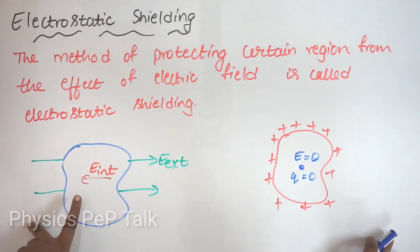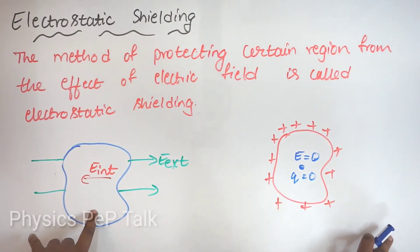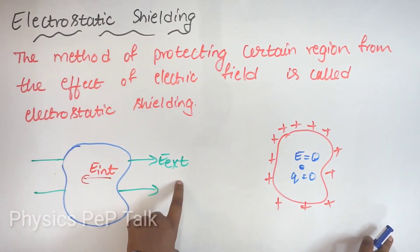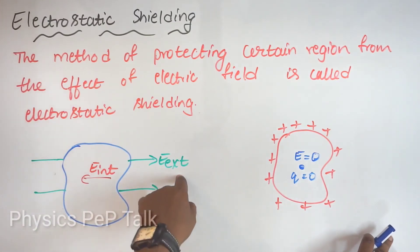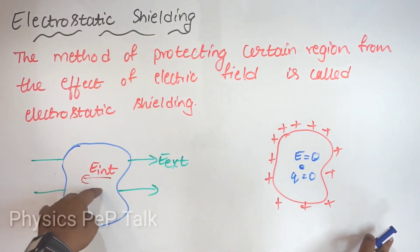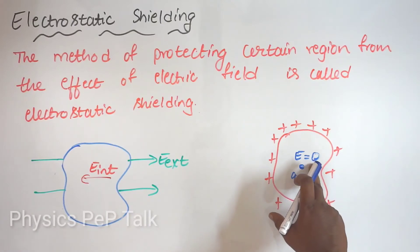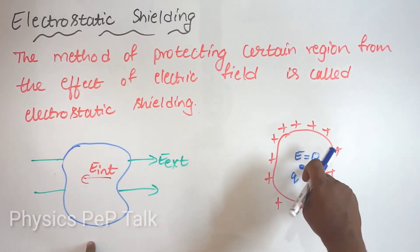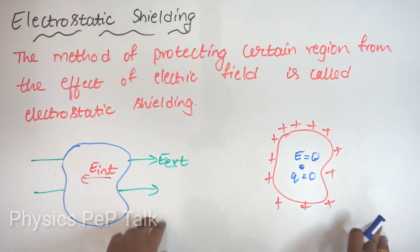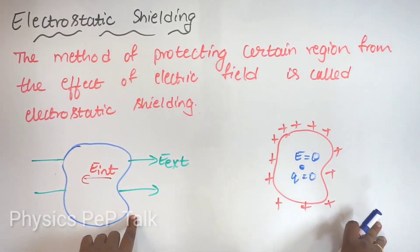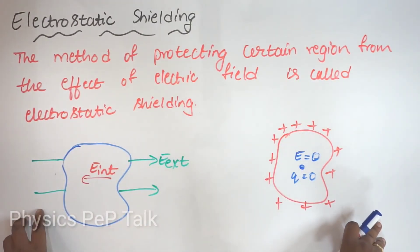Electrostatic shielding: if an uncharged conductor is placed in an external electric field, an internal electric field equal to the external electric field is created, making the net electric field inside zero. Similarly, for a charged conductor, the electric field inside is zero and the charge inside is zero. The method of protecting a certain region from the effect of an electric field is called electrostatic shielding.